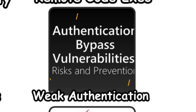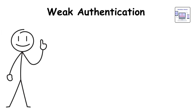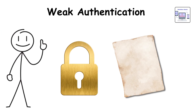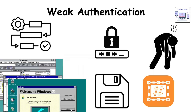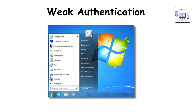Weak authentication. Imagine a lock made of thin paper. Older Windows systems stored passwords using weak hashing methods like LM hash, which could be cracked in minutes. Windows 7 still supported this for compatibility. It's the security equivalent of leaving a fragile key under the doormat.